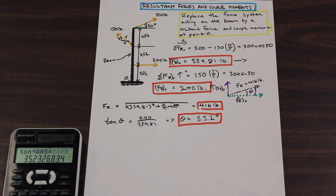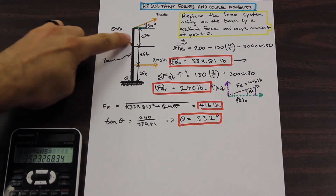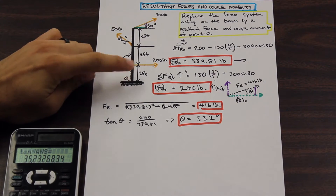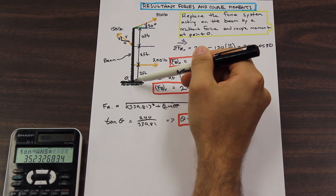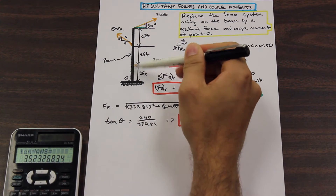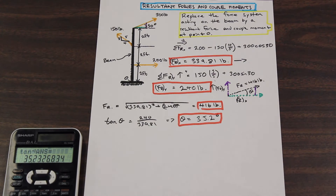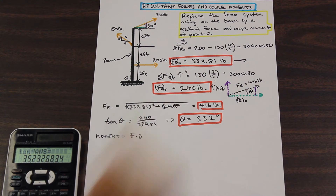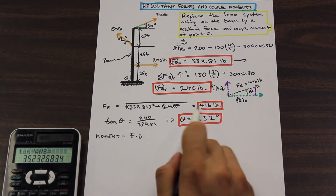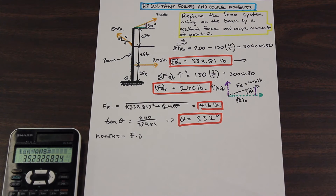Now we can translate — you can take any force and translate it to any point; this is a property of vectors. But when you move that force, you also need to consider the moment associated with it. If I take this 200 pound force and move it down to point O, I need to consider the moment that force was exerting at that point. A moment is force times the perpendicular distance to some point. So in addition to the resultant force, we need to find the couple moment at point O attributed to all three of these forces.